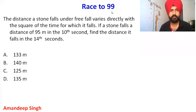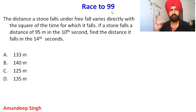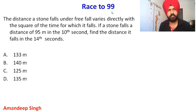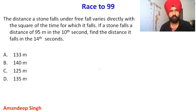Here the question is based on variation. What is free fall? When you drop an object without any restriction, the distance a stone falls under free fall varies directly with the square of the time for which it falls. If a stone falls a distance of 95 meters in the 10th second, find the distance it falls in the 14th second.